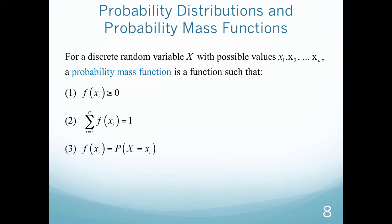For a discrete random variable x with possible values as x1, x2, dot dot dot, a probability mass function is a function such that, and then we have to have these three rules, such that the individual probabilities are greater than or equal to 0,